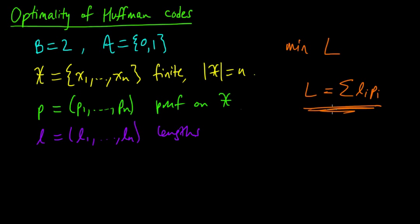By the Kraft-McMillan theorem, we know that for any uniquely decodable code, there's a prefix code with the same lengths, and so it can attain the same expected codeword length.